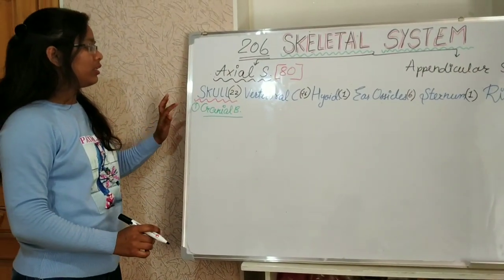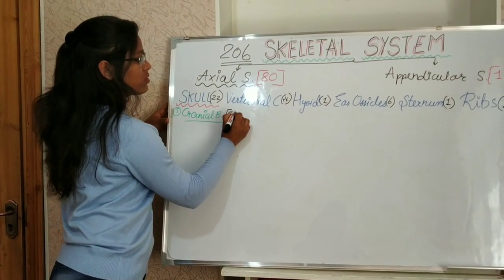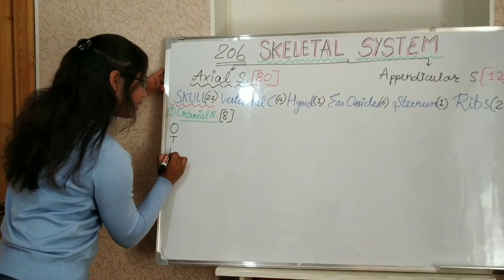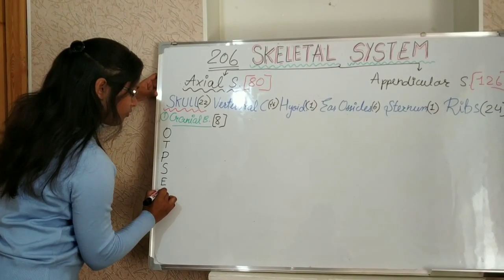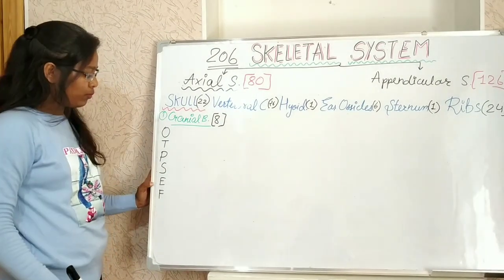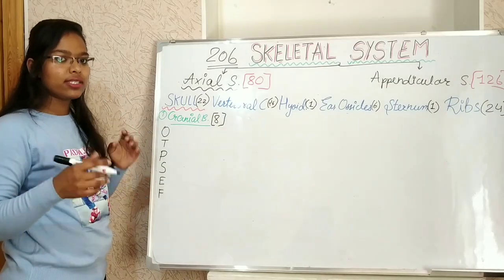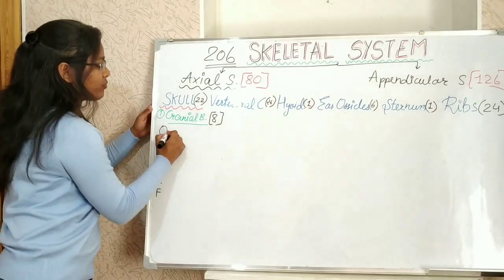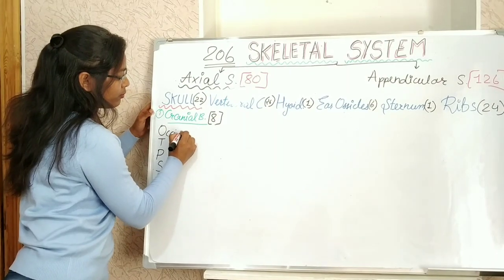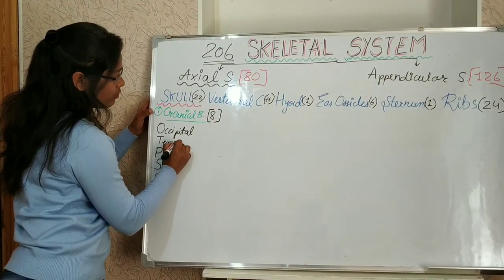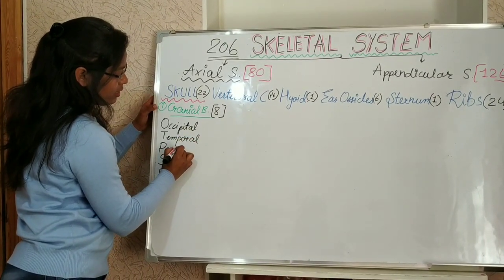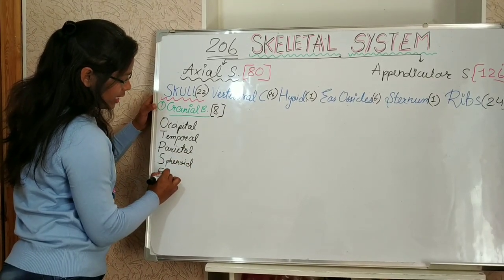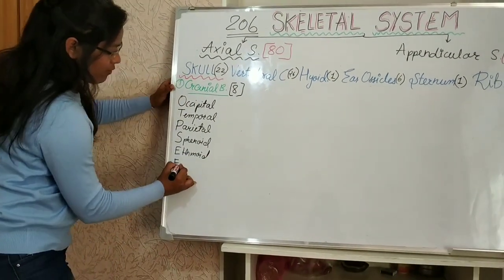In skull, cranial bones we have 8 cranial bones. You can remember this 8 bones by the formula OTPSEF. Everyone knows OTPS is always safe. O is occipital, T is temporal, P is parietal, S is sphenoid, E is ethmoid, F is frontal.